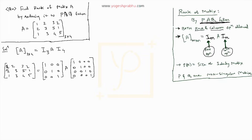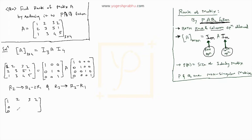The first step is to make the two entries below the leading 1 into zeros. To do that, I write R2 becomes R2 minus 2R1. Multiplying the first row by minus 2 and adding: 0, minus 1, minus 1, minus 3. And I do that on the identity matrix I₃ as well. R2 minus 2R1 gives minus 2 in the I₃ matrix.